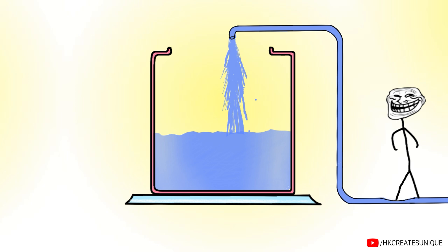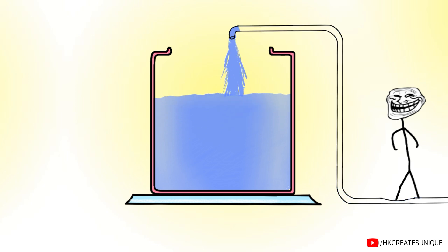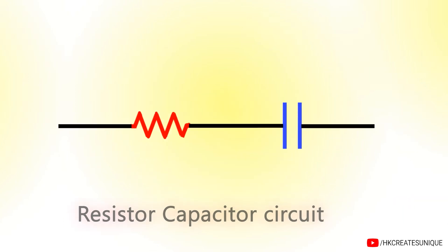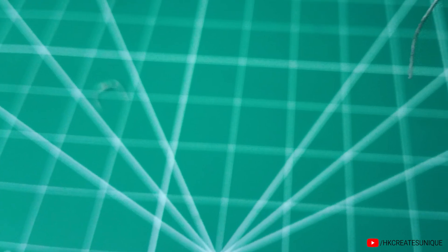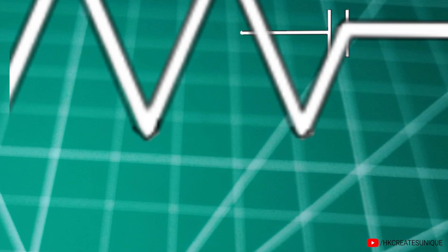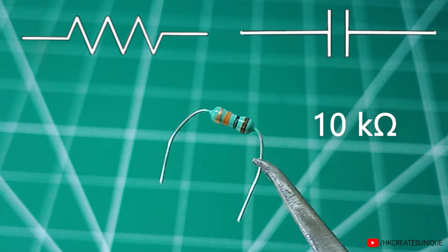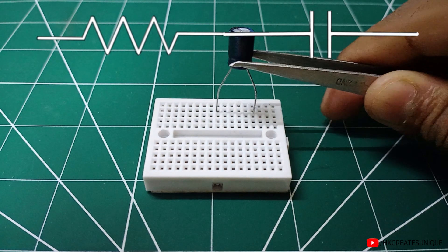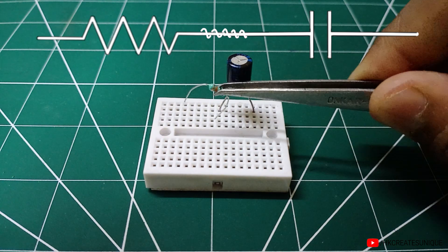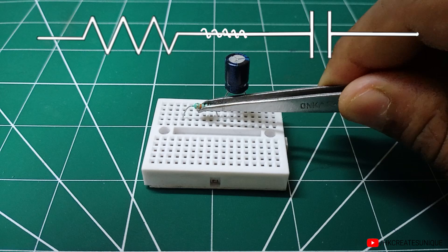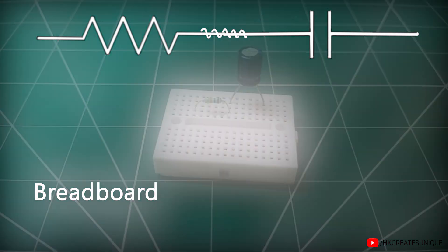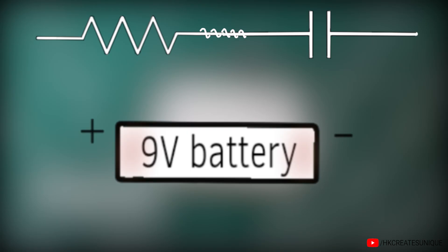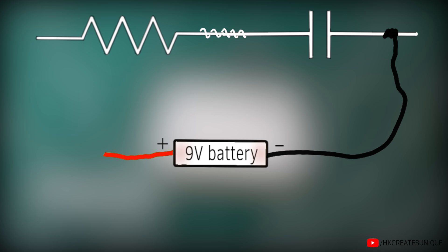We can compare water filling of a tank to an electric circuit as well — a resistor-capacitor circuit, or RC circuit in short. Take one capacitor and one resistor, then connect them in series like this. I am using a breadboard for this purpose. Lastly, connect a battery like this.